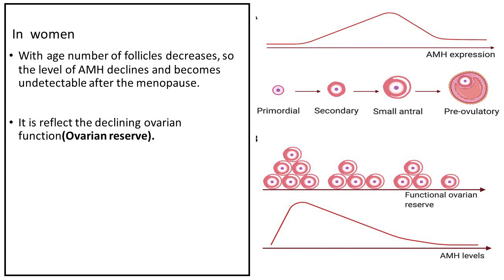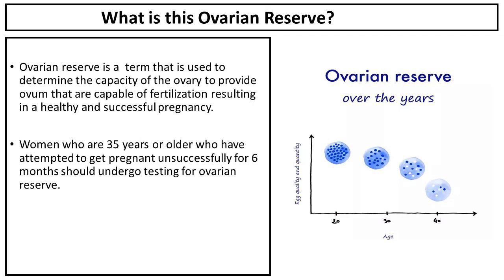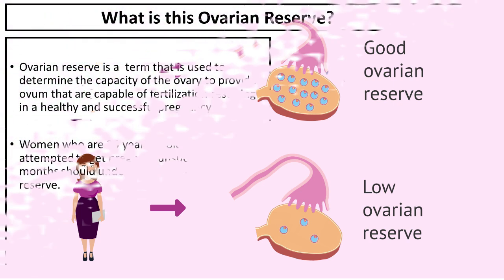In women, with age the number of follicles decreases, so the level of AMH declines and becomes undetectable after menopause, reflecting the declining ovarian function. Ovarian reserve is a term used to determine the capacity of the ovary to provide ova that are capable of fertilization, resulting in a healthy and successful pregnancy.